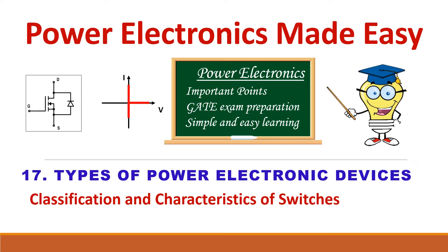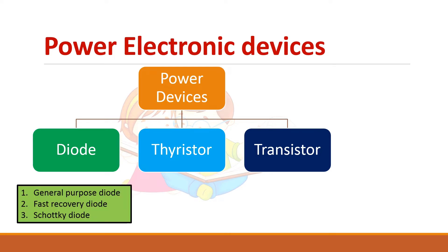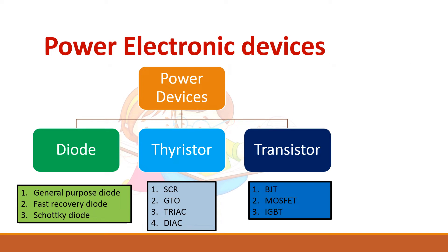Let us see the different types of power electronic devices and their ideal characteristics. Power electronic devices are of three types: diode, thyristor, and transistor. Under diode we have general purpose diode, fast recovery diode, and Schottky diode. Under the thyristor family we have SCR, GTO, TRIAC, and DIAC. Under the transistor family we have BJT, MOSFET, and IGBT. The construction and working of these devices have been covered in the previous videos.